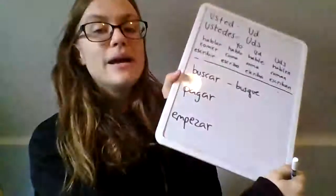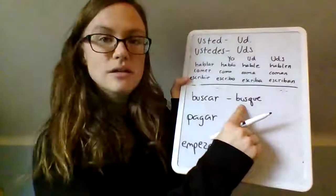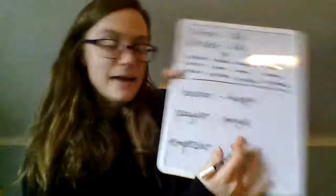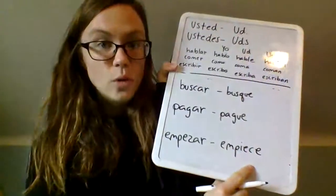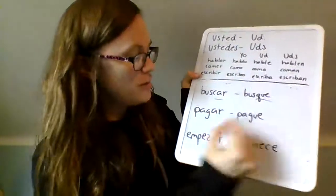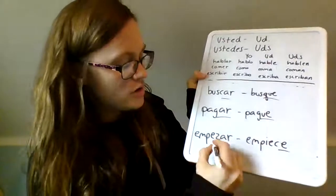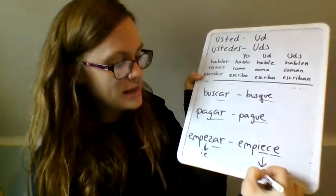Next, we have verbs ending in CAR, GAR, or ZAR. Buscar ends in CAR and means to look for. Pagar ends in GAR and means to pay. Empezar ends in ZAR and means to start or begin. In the command form, CAR becomes QUE: busque. GAR becomes GUE: pague. ZAR becomes CE: empiece. Note that empiece also has an E to IE stem change, which is why it's IE and not just E.